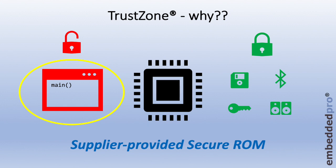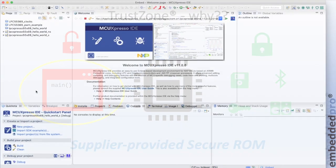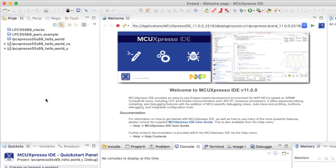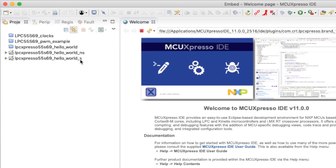Well, if we turn to MCU Expresso and look at the example TrustZone projects from the SDK, we note that there are two projects, a hello world underscore s secure project and a hello world underscore ns non-secure project.